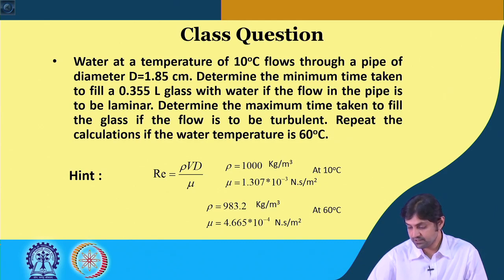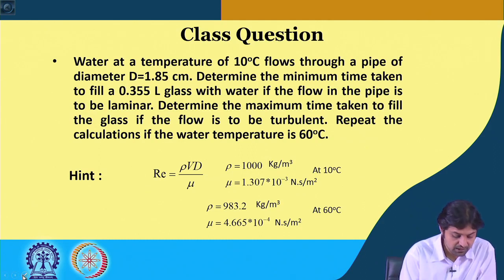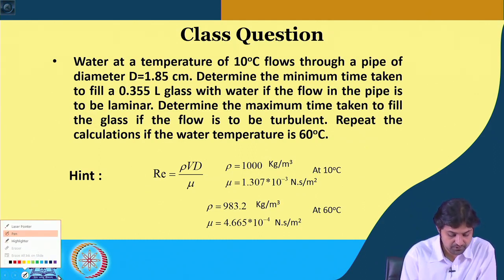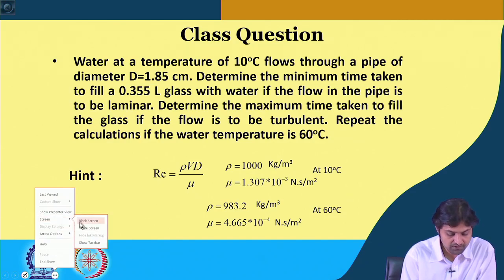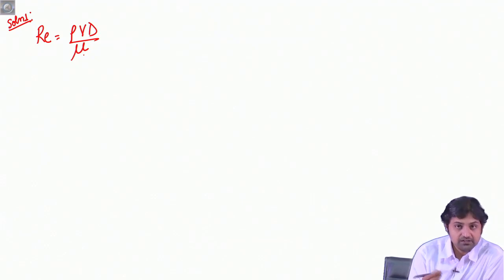This is the simplest, most basic question but it will help clarify the idea of laminar and turbulent flow in pipes. Let us start with the 10 degrees case. We know that Reynolds number is rho V d by mu. D is the diameter of the pipe. For laminar flow the critical Reynolds number is 2100 — any flow with Reynolds number less than 2100 is laminar.